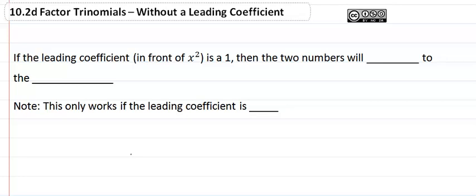10.2d: Factor trinomials without a leading coefficient. If the leading coefficient in front of our x squared term is a one, then the two numbers will add to the middle.